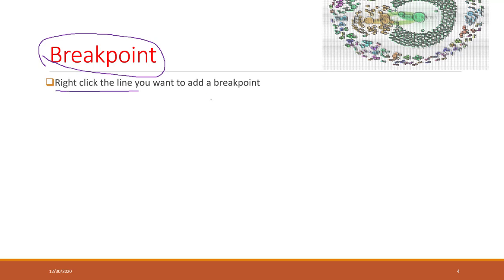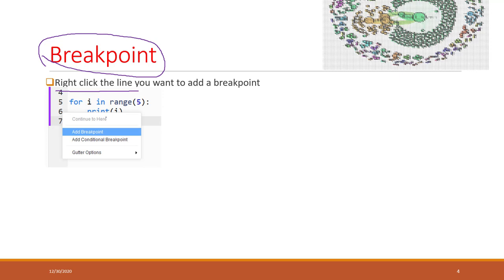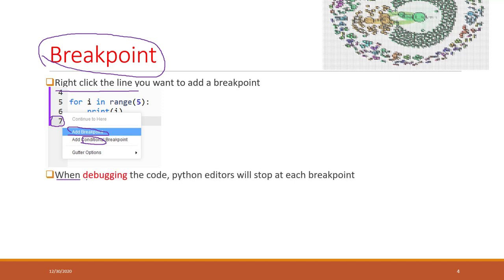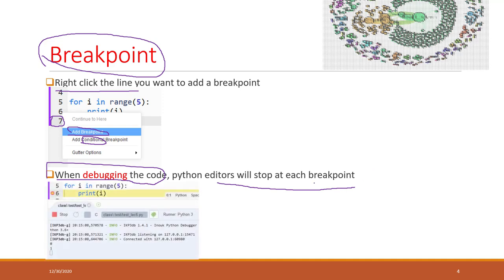We can right-click a line to add a breakpoint. For example, in Cloud 9, you can right-click on a line and see the option to add a breakpoint. Cloud 9 even supports conditional breakpoints. Once added, you can enable the debugging mode, and the Python editor will stop at each breakpoint.